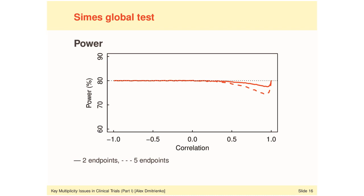Since the Symes test is not guilty of overcorrection, it should not be surprising that the power curves for the Symes adjustment look much more attractive compared to the Bonferroni. With 2 endpoints, there is only a little power loss of a few percentage points. With 5 endpoints, there is more loss when correlation is very strong, but this loss is an order of magnitude smaller compared to the Bonferroni case. This is the reason we will spend time discussing Symes-based multiple testing procedures such as the Hochberg and Homel.